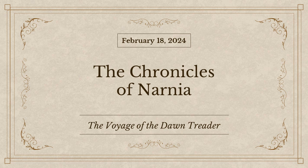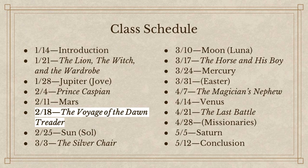Good morning, everyone, and welcome back to our Sunday school class on the Chronicles of Narnia. This morning, we are going to begin our discussion on the Voyage of the Dawn Treader. If you've been following with us, this will be our sixth lesson of the series. We're spending about two weeks on each book, going in publication order. We have already covered The Lion, the Witch, and the Wardrobe and Prince Caspian. Today and next week, we'll be discussing The Voyage of the Dawn Treader.